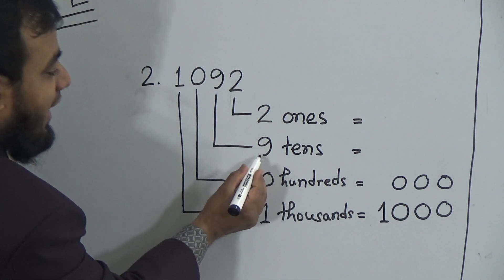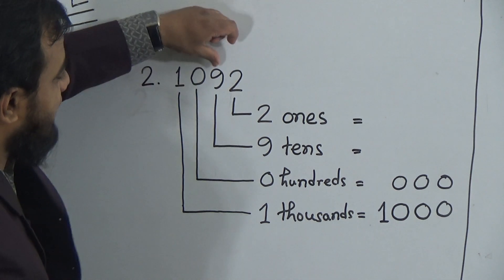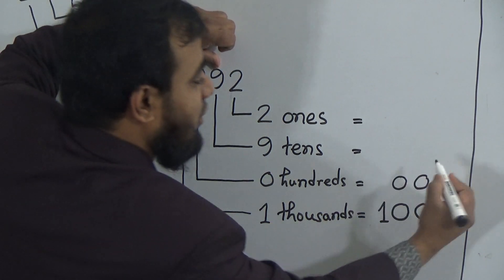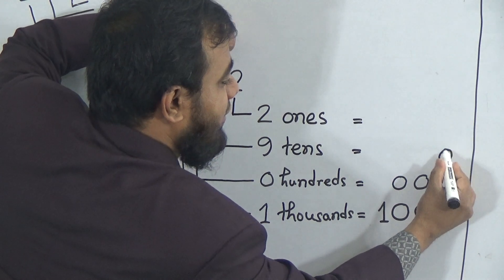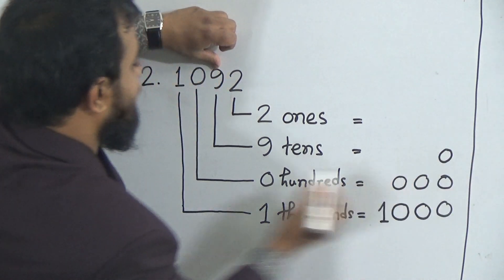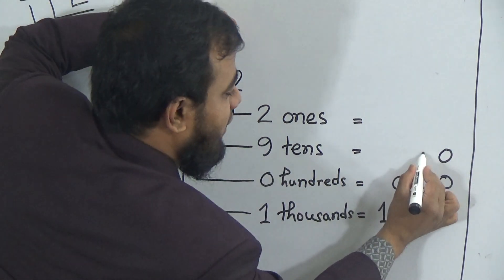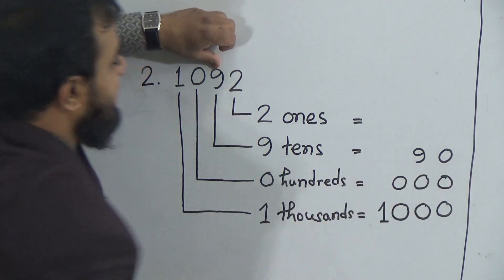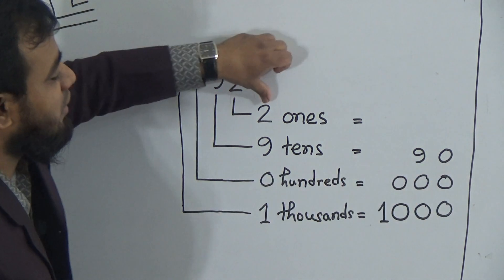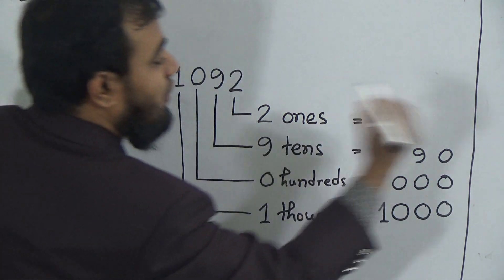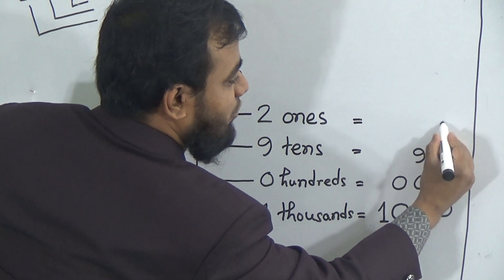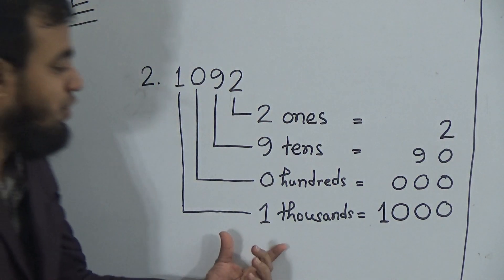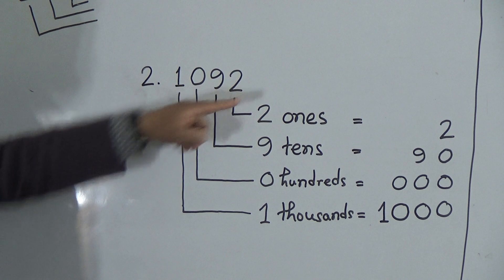Now, 9 tens — after 9 there is only 1 digit, so we use 1 zero from the right side and before that write the number 9. That means 9 tens equals 90. Now, 2 is in the 1's place, so we write 2 on the right side at the top. This is the place value of the number 1092.